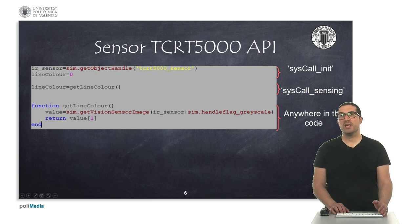But in this case, because we are simulating an infrared sensor, we need to provide a flag to obtain the image in a grayscale format, as you can see there.